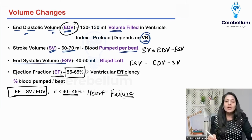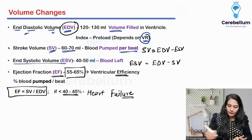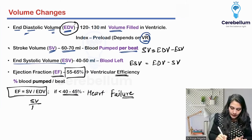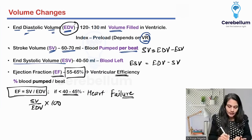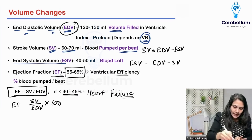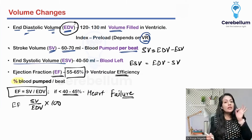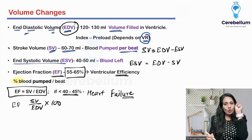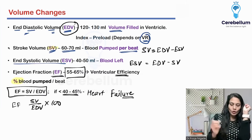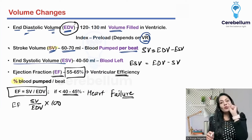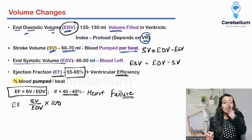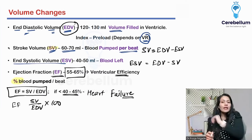The formula for ejection fraction — remember this: EF = SV / EDV × 100. That gives you the percentage of blood pumped in one stroke, which is the ejection fraction.